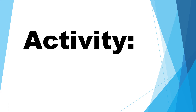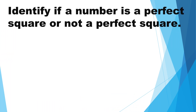Let us have this activity. Identify if a number is a perfect square or not a perfect square. A square number or perfect square is a number obtained when we square a number, or when we multiply a number by itself two times.